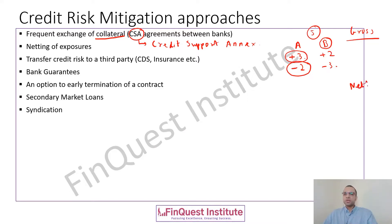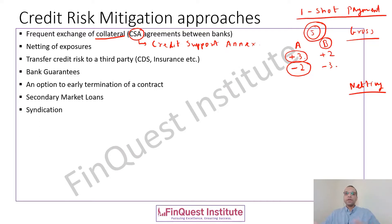The second approach is netting of exposures, which is what counterparties prefer. Whenever there is netting of exposures, we combine all five trades together and come up with a single quantum which is due from one party to the other — just one net payment from one party to the other under a netting agreement. So with three trades in the money and two out of the money, we combine them and arrive at a final number. The sign of that number tells me whether I owe money to someone or can expect money from my counterparty. This is what we call netting of exposures, and it is more of a market standard.